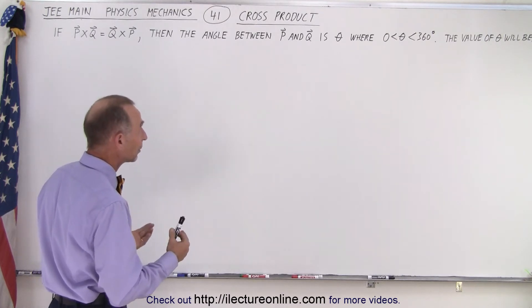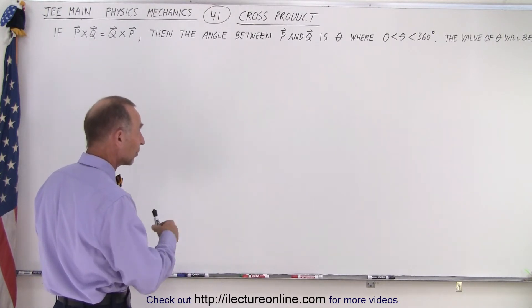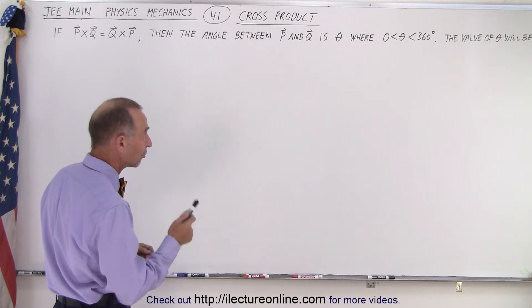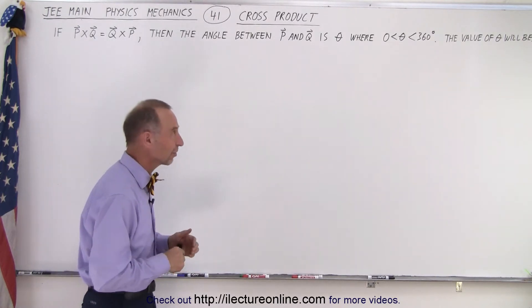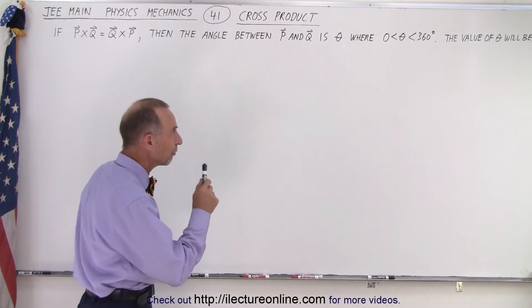P and Q, is theta, where theta must be somewhere between 0 and 360 degrees. Notice it does not include 0, and it does not include 360 degrees. The value of theta will be...